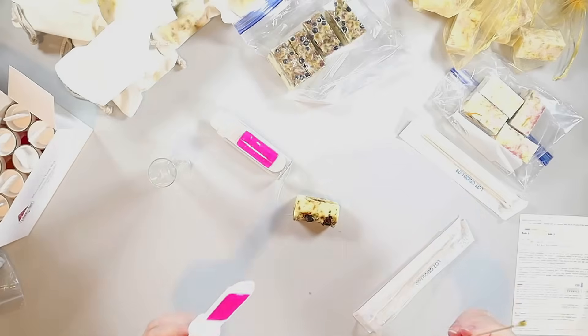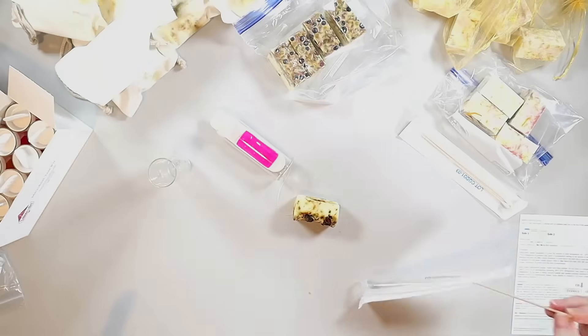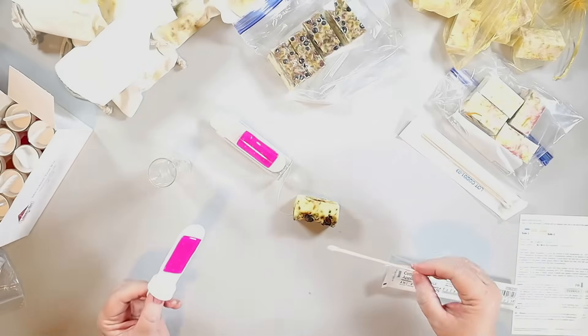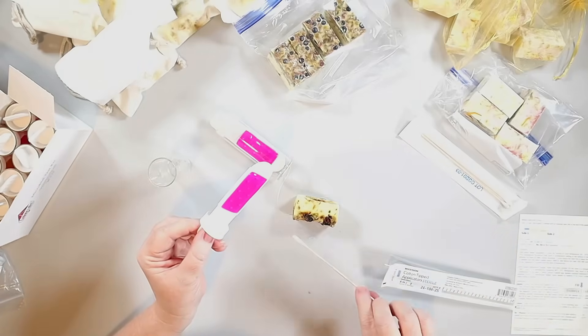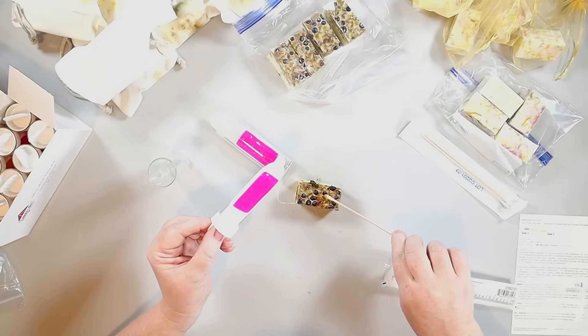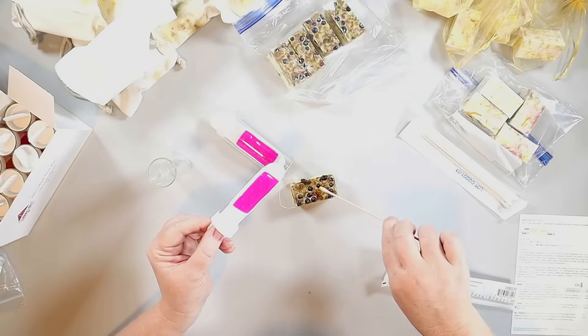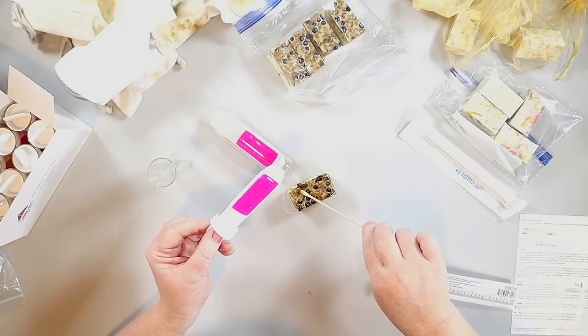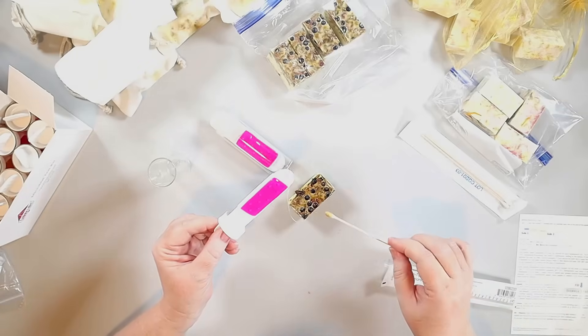Some might look like nothing's there or barely anything's there, but some are expected. When I show you the picture at the end with the comparison card, I think it's a thousand colonies per so many somethings that is allowed in the U.S. in your products.